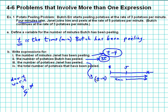So here we have to get used to the idea of using an expression to stand for a number here. What is Janet's rate? She has a different rate, 5 potatoes per minute. She's peeling more efficiently. So it's 5 potatoes per minute times the number of minutes she's been peeling.